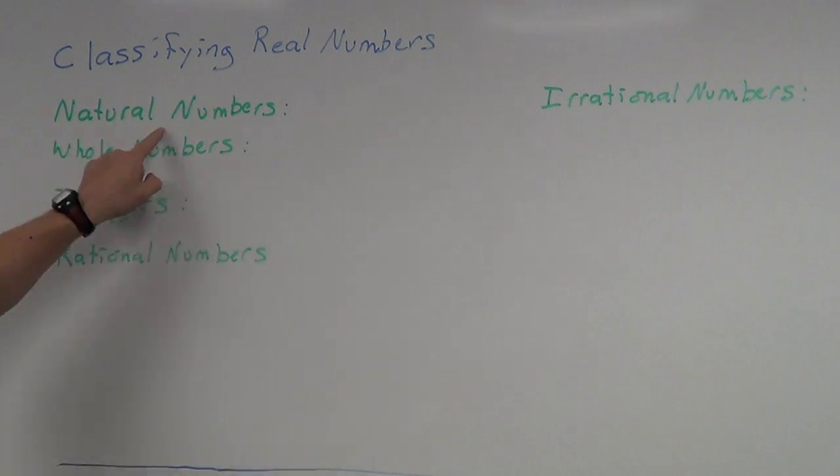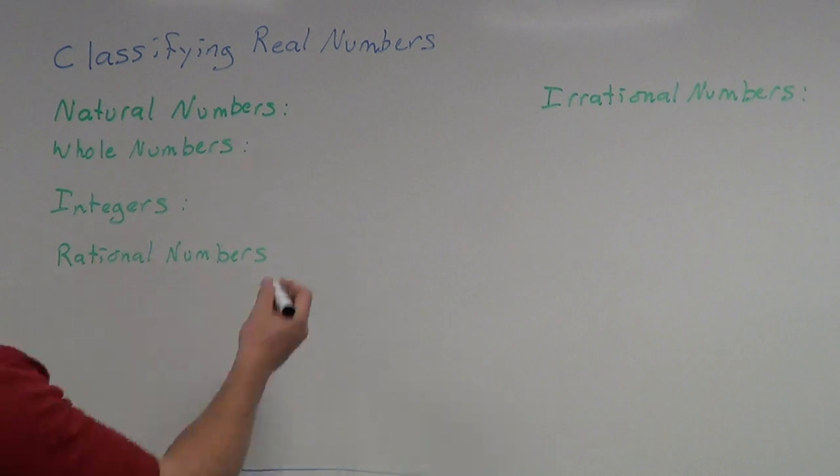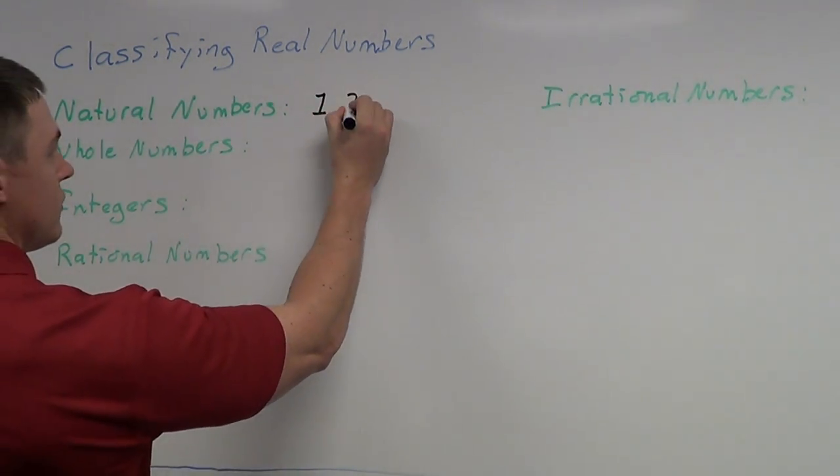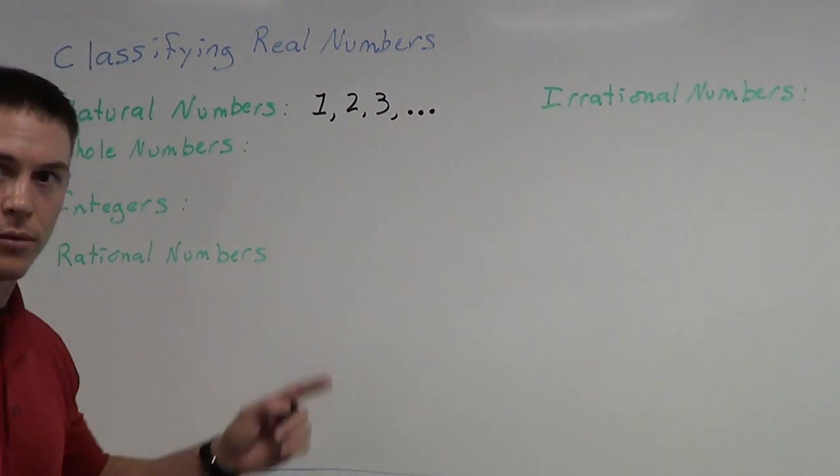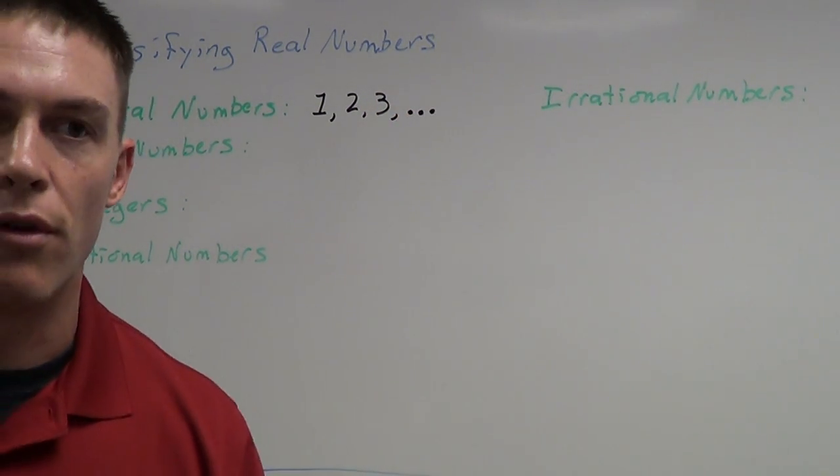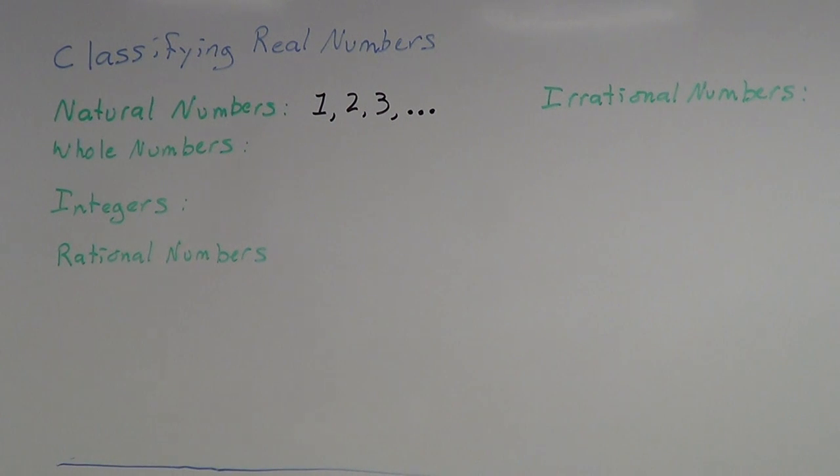First off, we have the natural numbers. Natural numbers, you can also call those the counting numbers. That's what they're commonly referred to as. The natural numbers are your simplest ones. Your one, two, three, so on and so forth. The three little dots mean so on and so forth in that fashion. Back in the day, these natural numbers were used to count your flock of sheep or your cattle or whatever it is that you had.